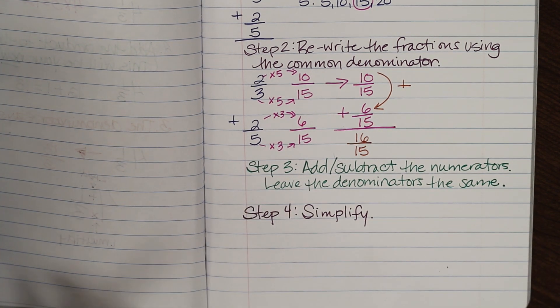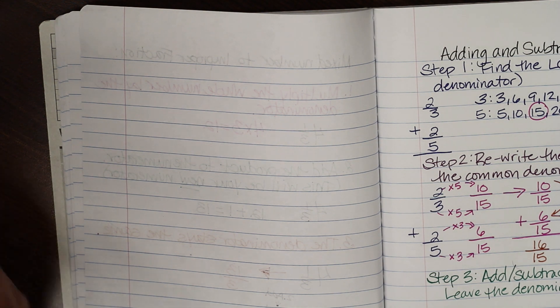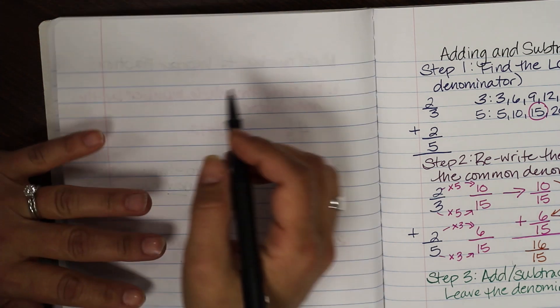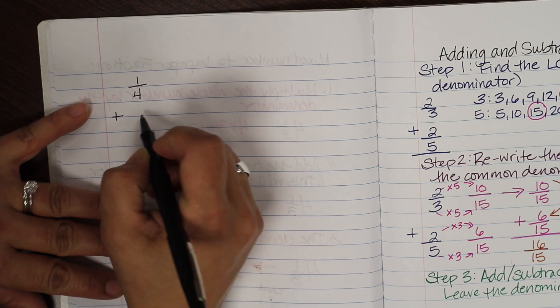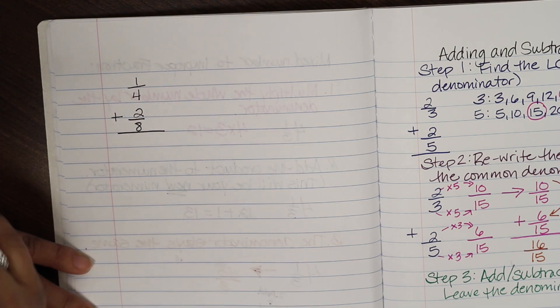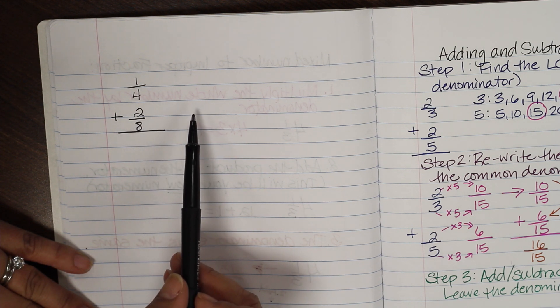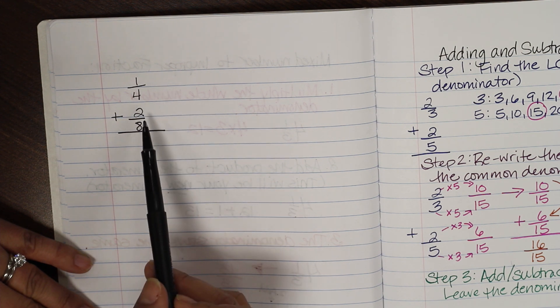Now we'll do some example problems on our left hand side of our INB. And on these example problems be prepared to show your teacher what you have done. So we're going to have the equation one fourth plus two eighths. So I want you to add those together. Remember our first step was to find the common denominator. The second step was to rewrite our fractions using that common denominator. And the last step was just to add the numerators.